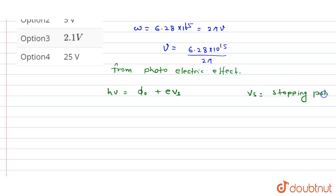We have to find the value of Vₛ, and φ₀ is the work function. So we can write that eVₛ equals hν minus φ₀, and so the value of Vₛ equals (hν - φ₀) divided by e.